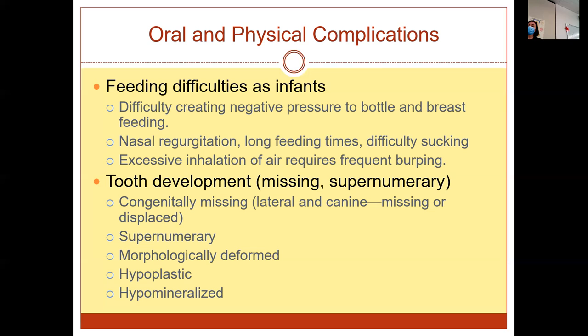They can also have supernumerary teeth, morphologically deformed teeth, hypoplastic enamel — thin, missing, or underdeveloped enamel — or hypomineralized enamel with decreased mineral content, where there's not as much mineral, it's thinner, or just missing.